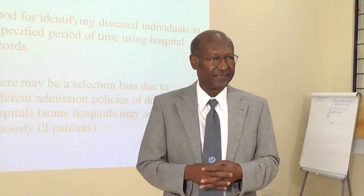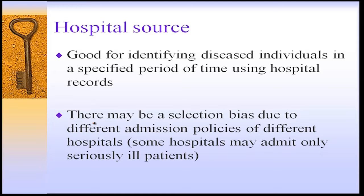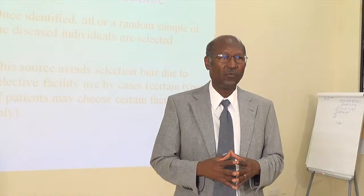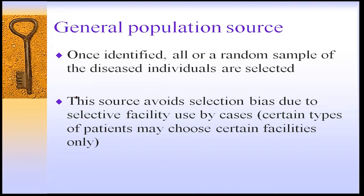The hospital source is good for identifying diseased individuals in specified periods of time using hospital records. There may be a selection bias though, due to the different admission policies of different hospitals — some hospitals may admit only seriously ill patients. The general population source avoids this selection bias due to selective facility use by cases, where certain types of patients may choose to visit certain facilities only.